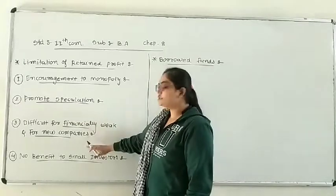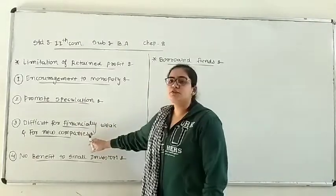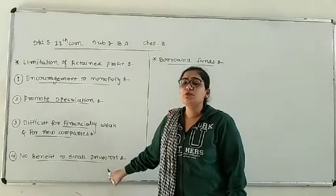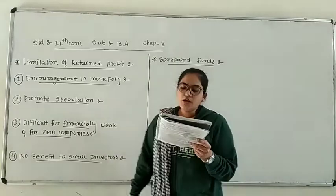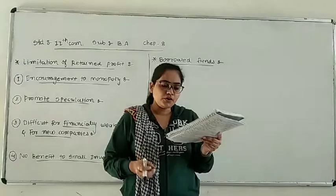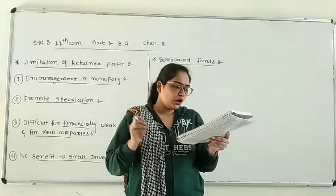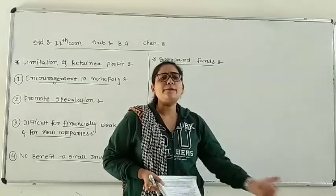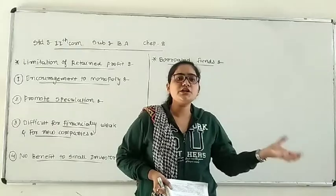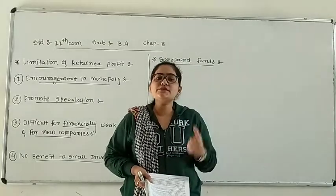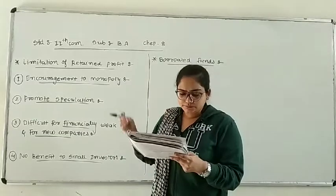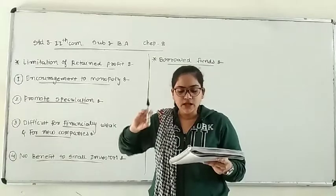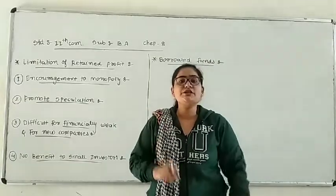So if you start a new company, the last limitation is that there is no benefit for small investors. Small investors have no benefit — you have to give a small dividend. Small investors invest in a business with the expectation of higher dividend. So after expectation of higher investment, they expect a high rate, high interest, high dividend. But if the directors prefer ploughing back of profit more, then small investors do not get sufficient dividend.